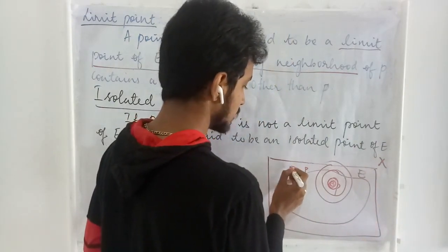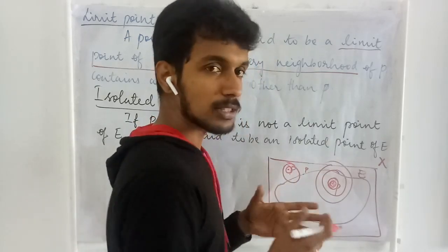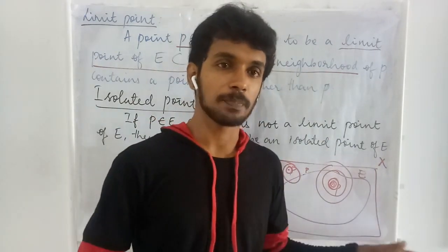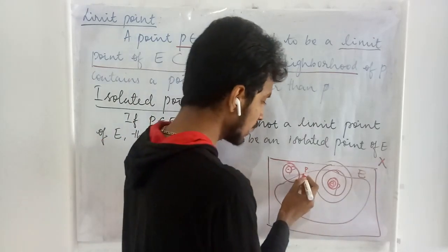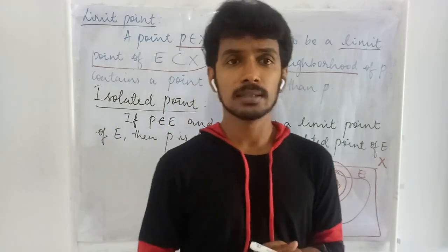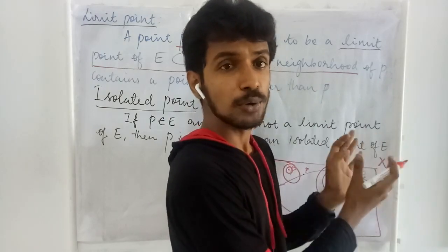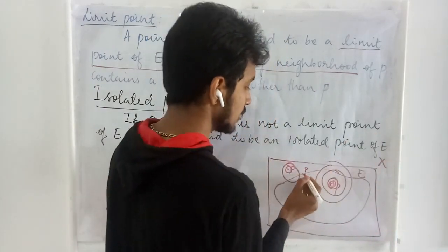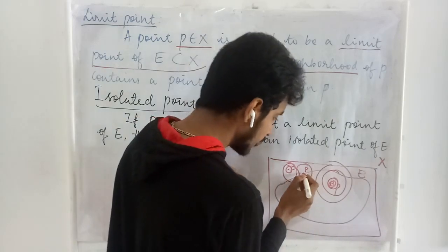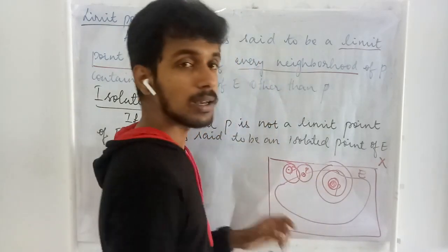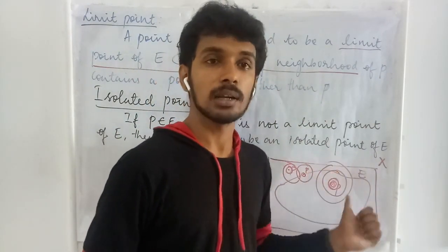Let us see. If we fix a radius to be a quite large one, we get some points of E inside this neighborhood. But when we fix a smaller radius, we do not get any points of E. Therefore, this point is not a limit point of this set. Here I have taken a point on the boundary, but still I do not have any guarantee that this boundary is included in the set or not. If we choose a big radius, we are getting points of E. Even if we choose a very small radius, in this case we are getting points of E too. So this point is also a limit point of E.